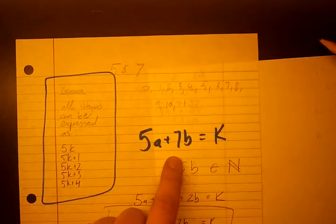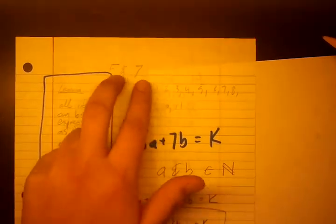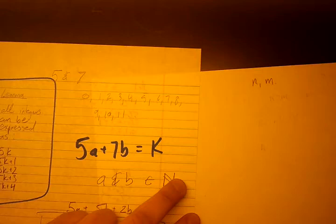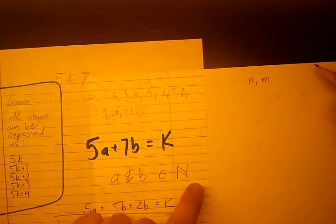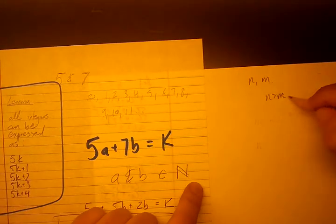So let's see what we did in this example first. We had two numbers to begin with, 5 and 7, so we're going to call the two numbers n and m. And we're going to arbitrarily let n be greater than m.